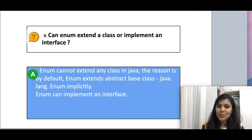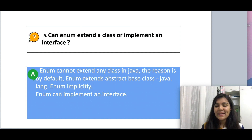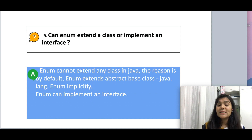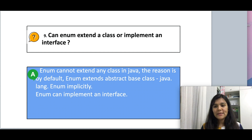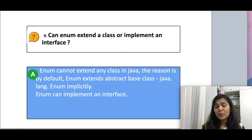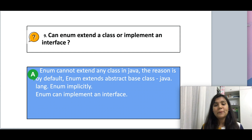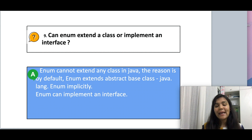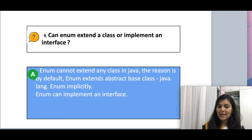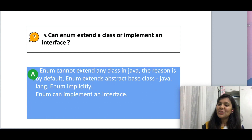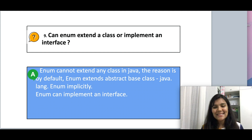Moving on to the next question about enums: can an enum extend a class or implement an interface? Enums cannot extend any classes in Java because they implicitly extend the abstract base class java.lang.Enum. Since multiple inheritance is not supported in Java and the enum is already extending a base abstract class, it cannot extend any other class. However, enums can implement an interface. In fact, by default an enum implements one interface — I'll leave that for you to put in the comment box and I will verify if it's the correct answer.